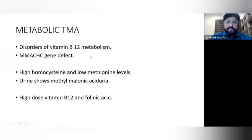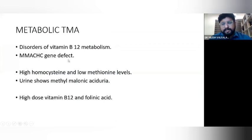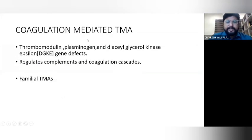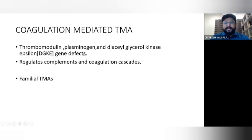Metabolic TMA is mainly due to disorders of vitamin B12 metabolism. A methylmalonyl-CoA mutase (MMACHC) gene defect causes high homocysteine levels and low methionine levels in blood, with high methylmalonic acid in urine. Treatment is by giving high-dose vitamin B12 and folic acid, with complete reversal. Coagulation-mediated TMA involves gene defects in thrombomodulin, plasminogen, and diacylglycerol kinase epsilon, which regulate complement and coagulation cascades, representing mainly familial TMAs.